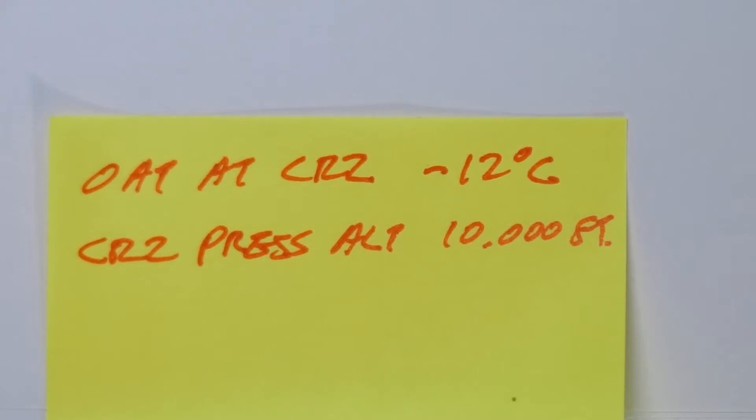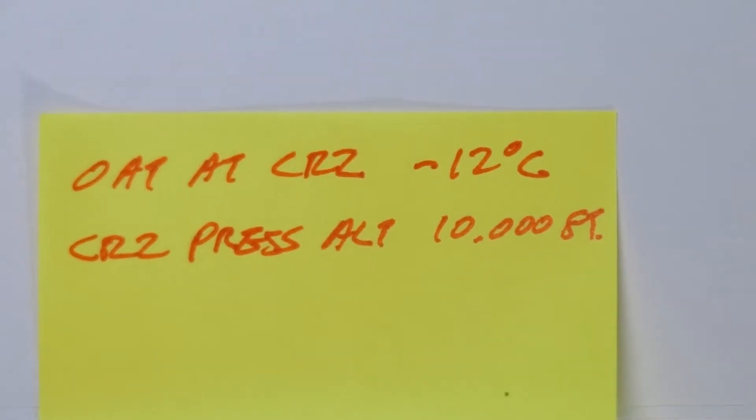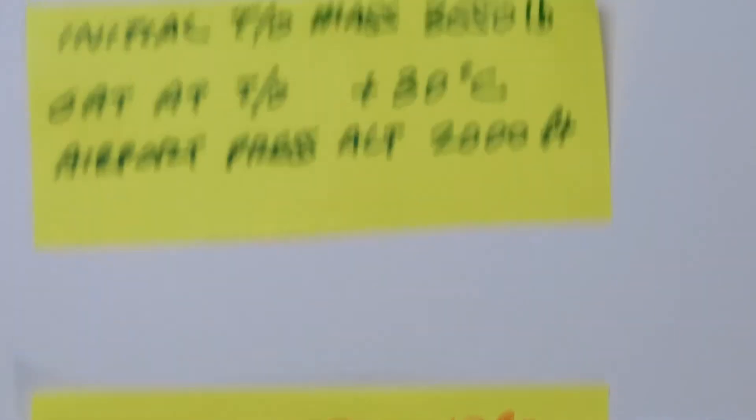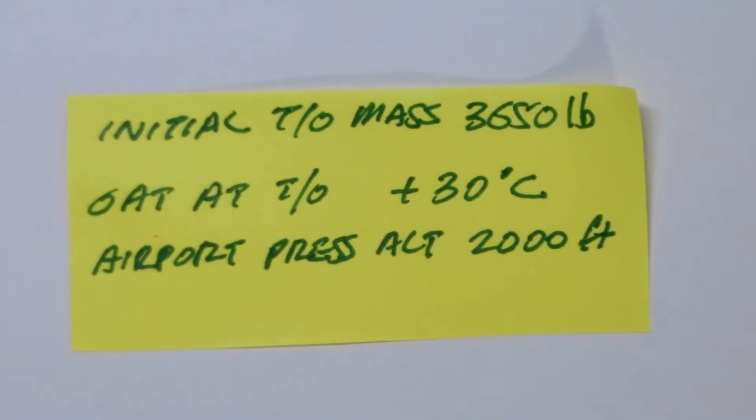And I'll explain how the previous example will work into this one in a little bit. But for now, we are going to do the time, fuel, and distance for an example that hypothetically would takeoff at sea level and climb to the airport pressure altitude of 2,000 feet.